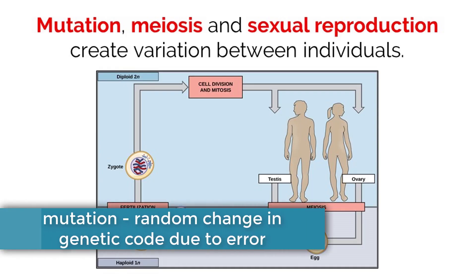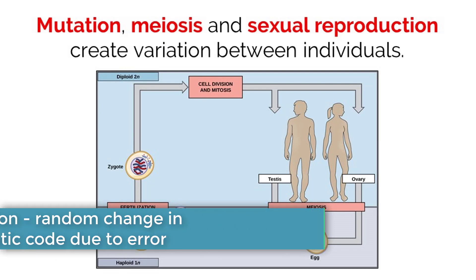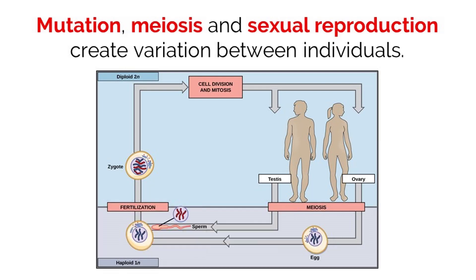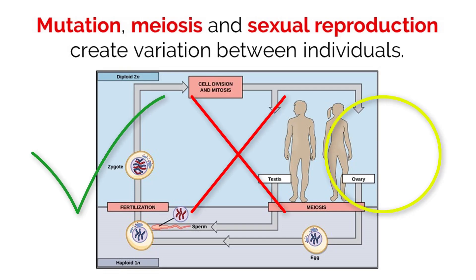Mutations are random changes in the genetic code and can be either beneficial, harmful, or have no effect on the phenotype of an organism. While scientists have a pretty good grasp of where mutations can occur, it is always random as to whether the mutation will be good, bad, or neutral. This random change causes variation in the genome.